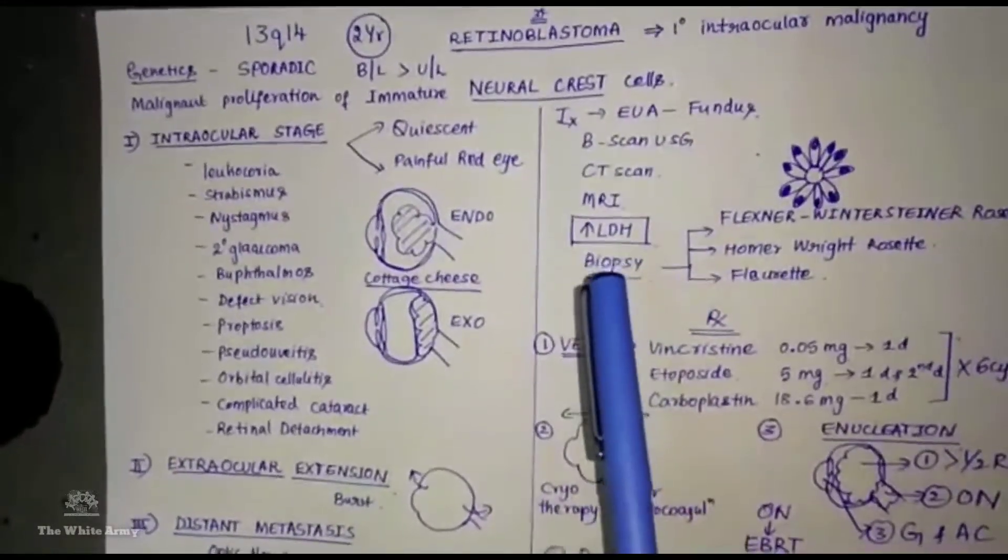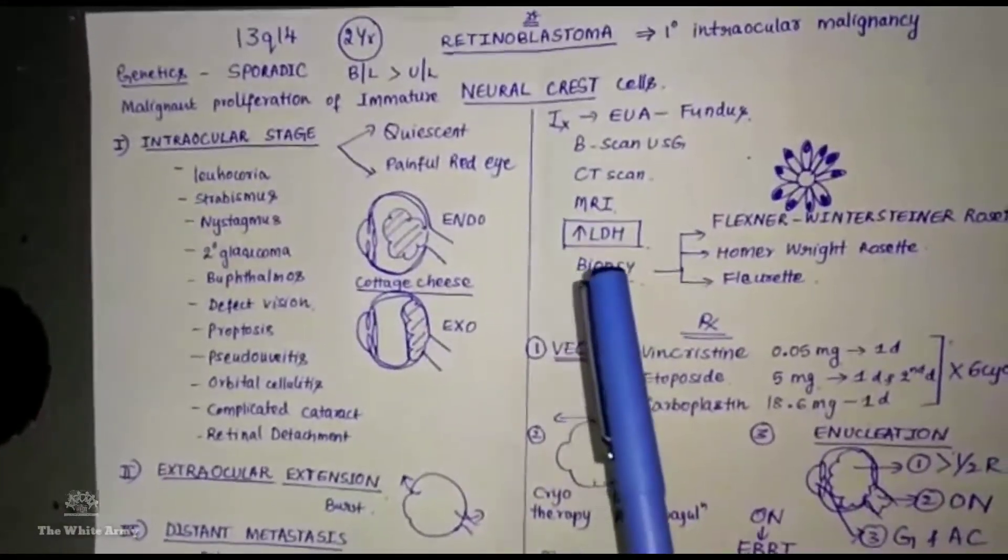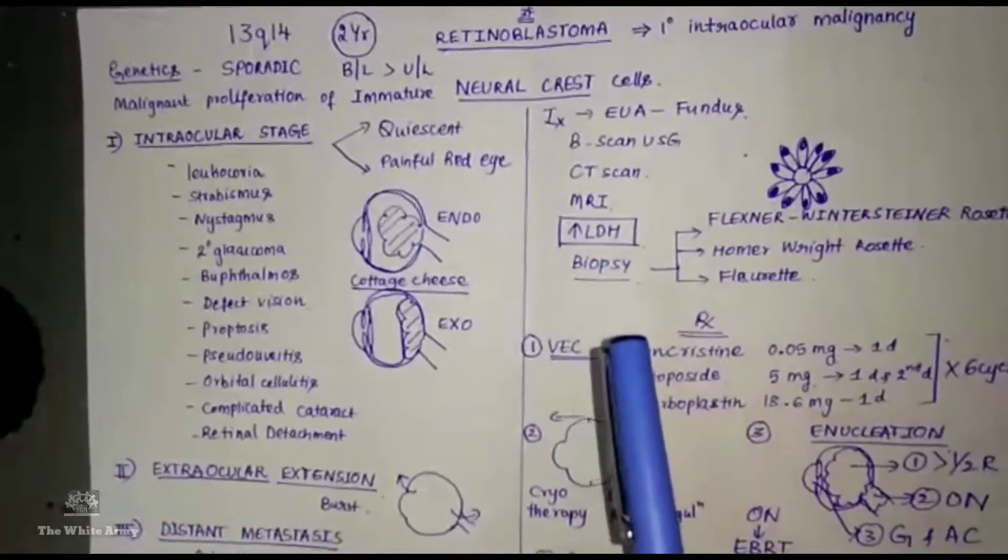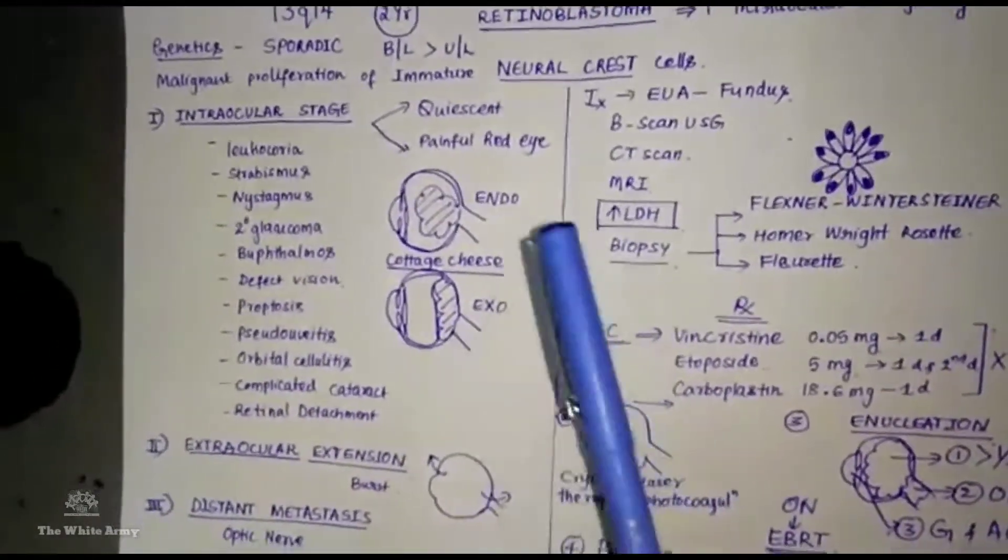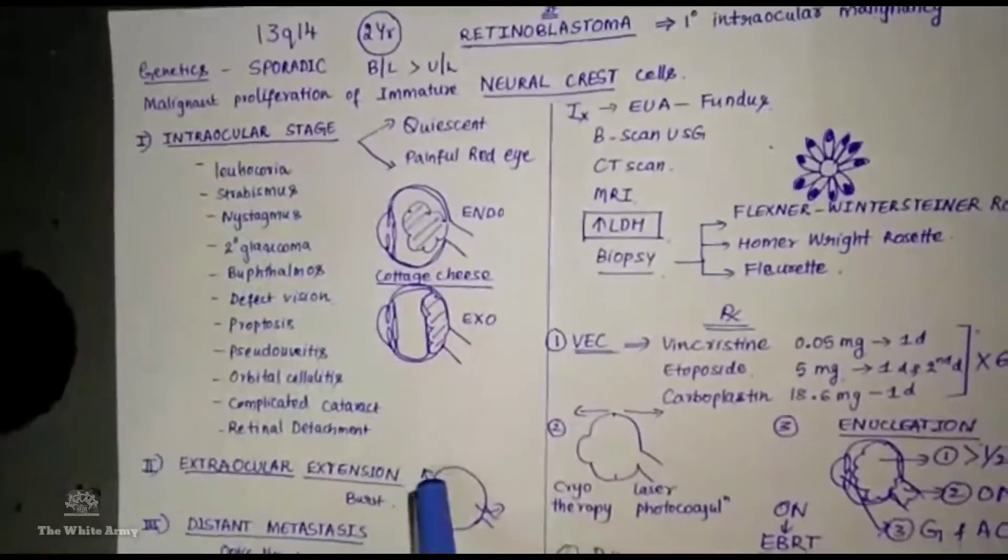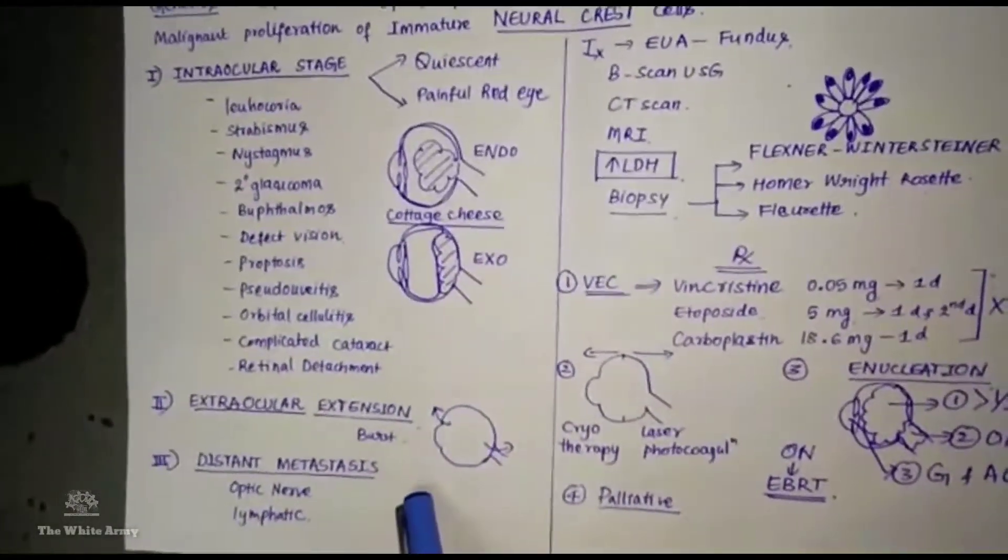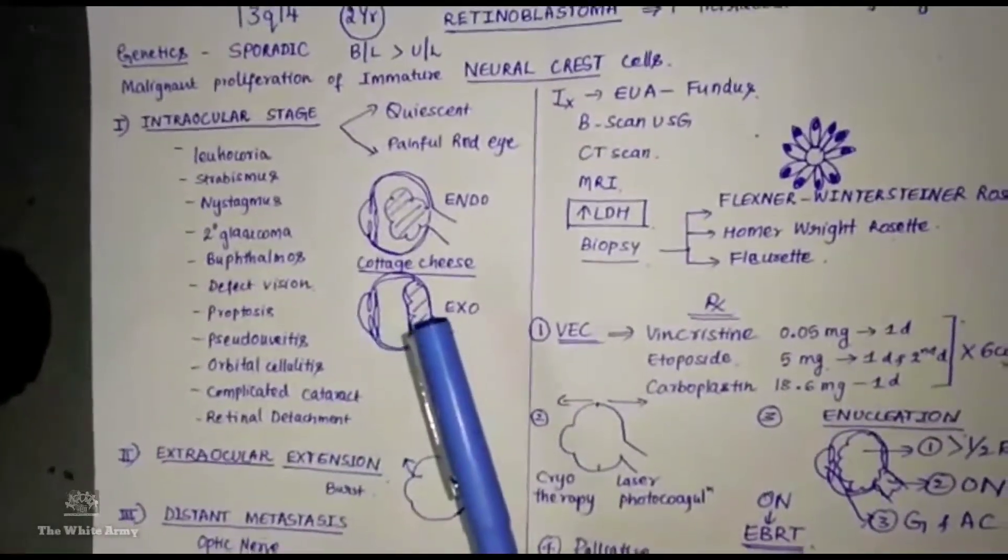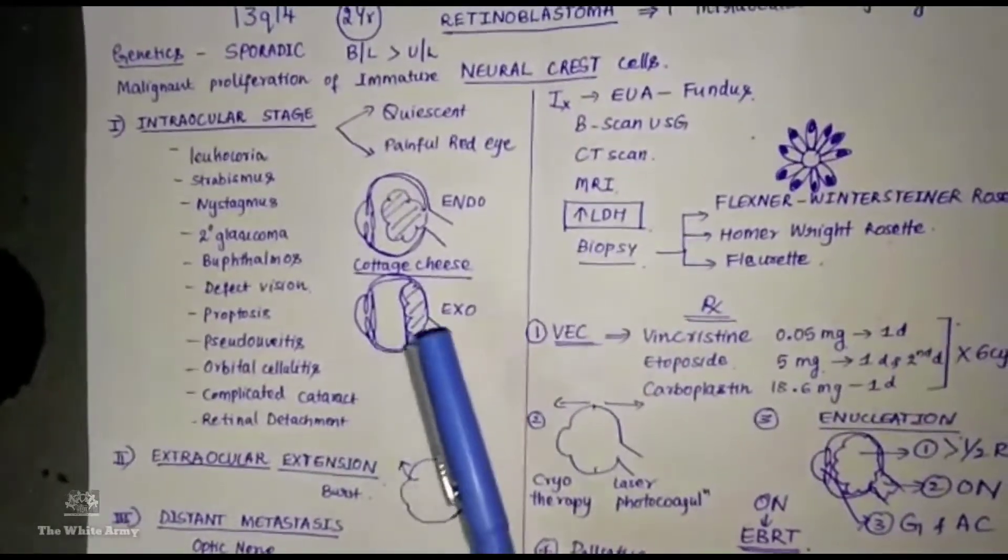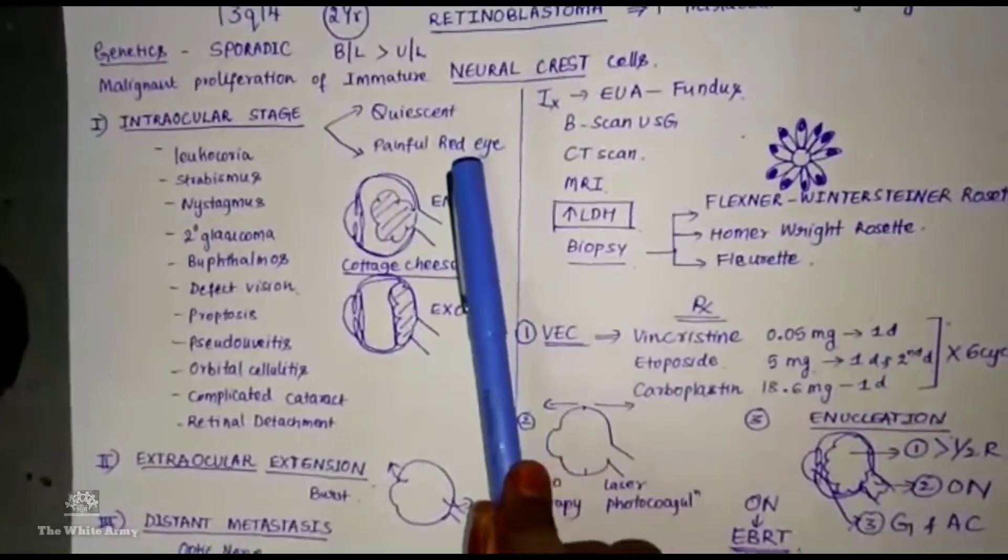Coming to the presentation or clinical features, it occurs in 3 stages: intraocular stage, extraocular stage, and distant metastasis. The intraocular stage has two parts: one is crescent, another is painful red eye.